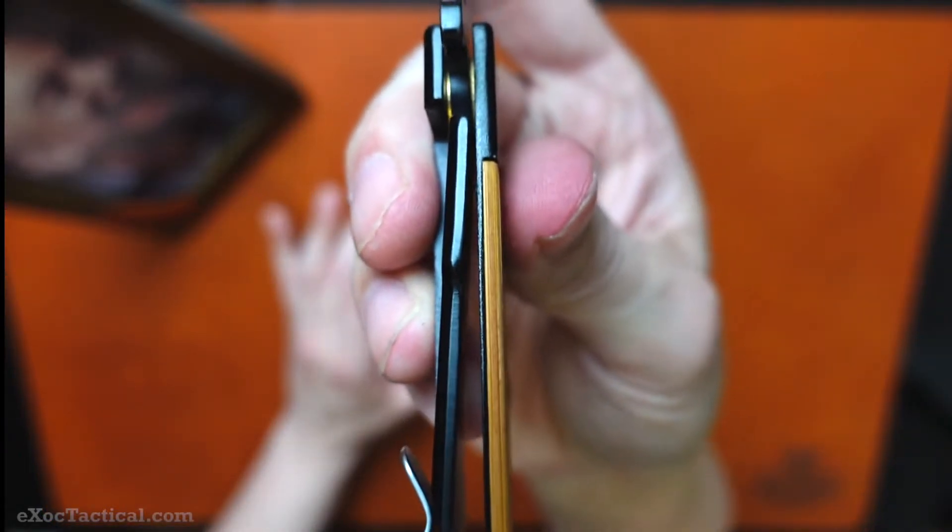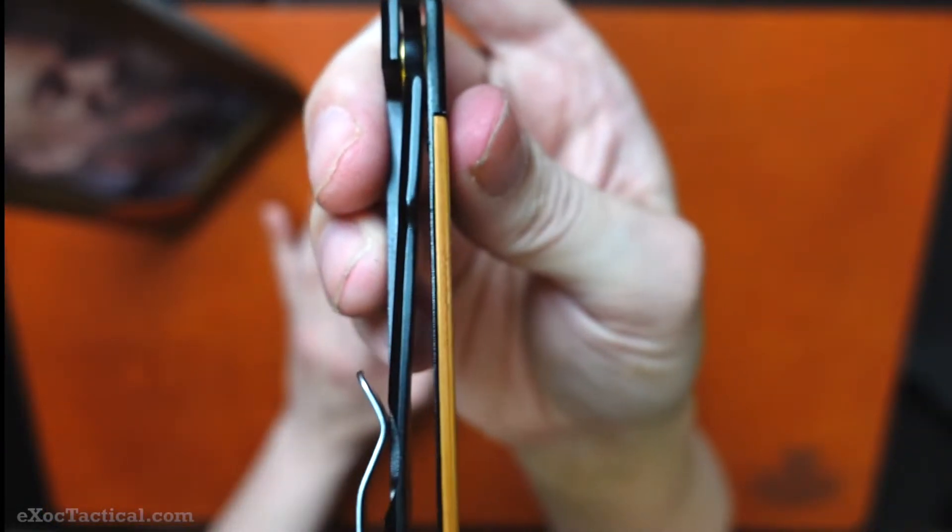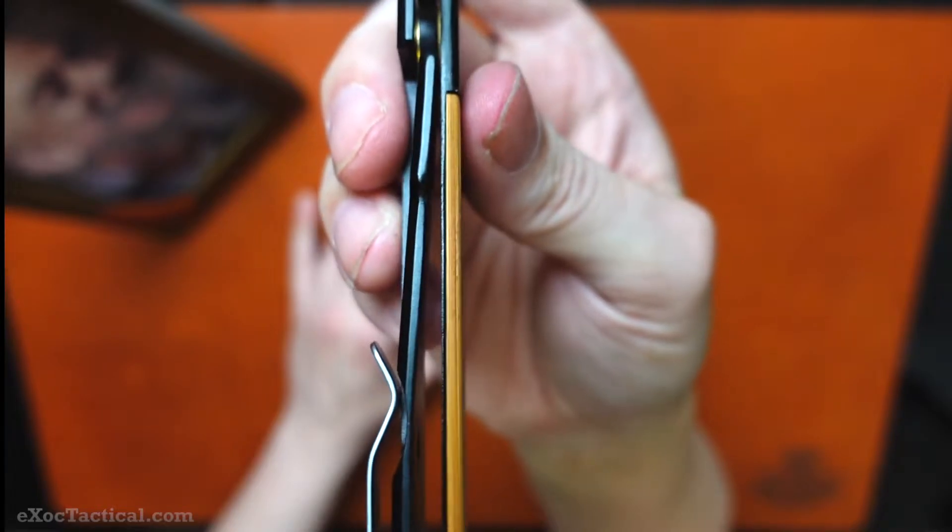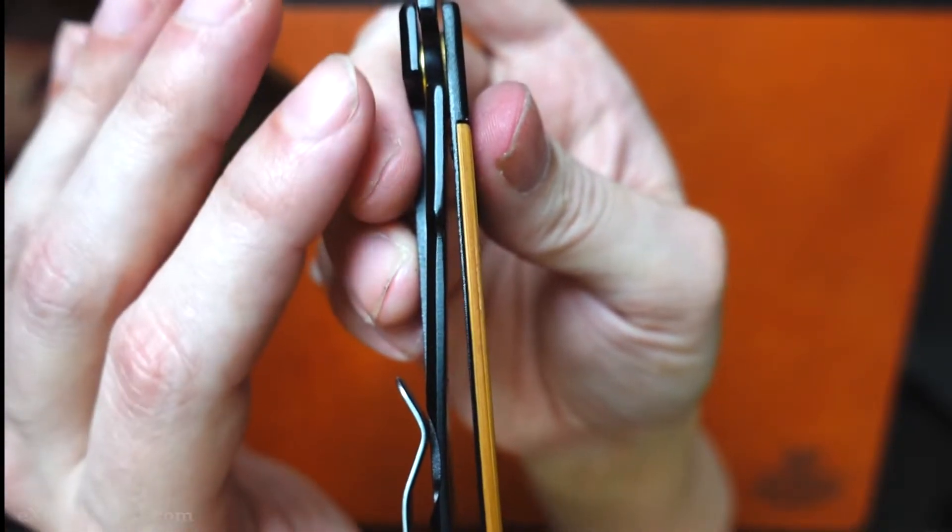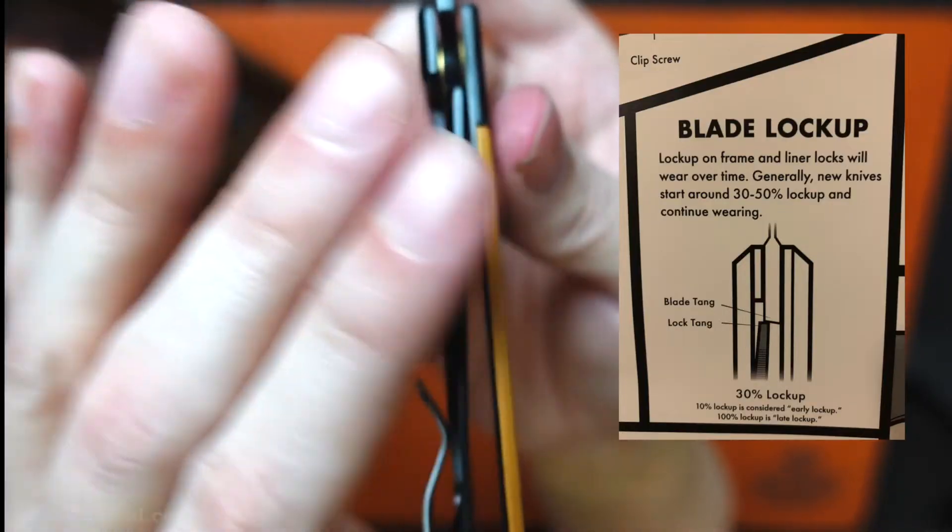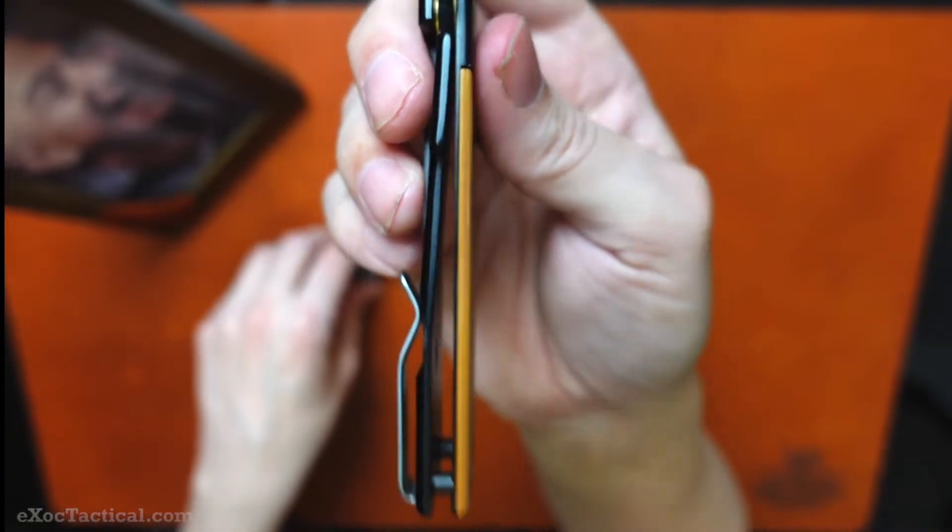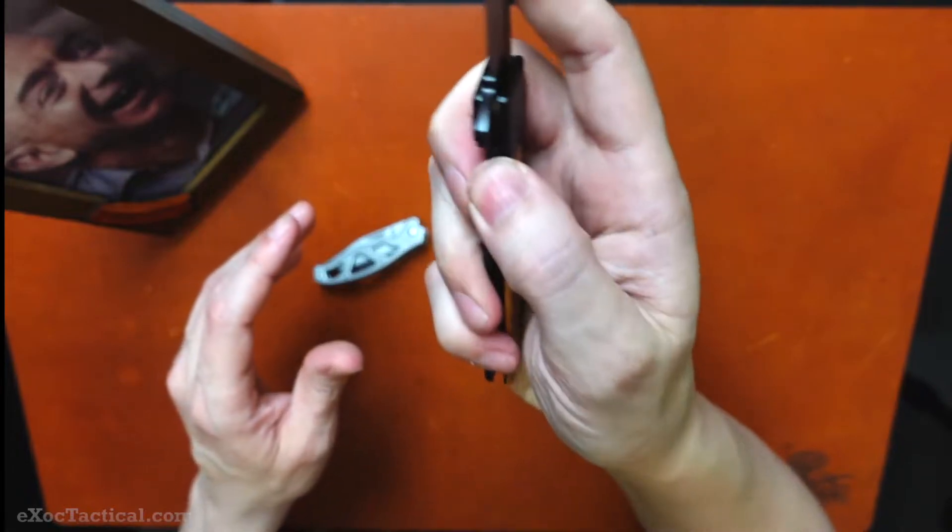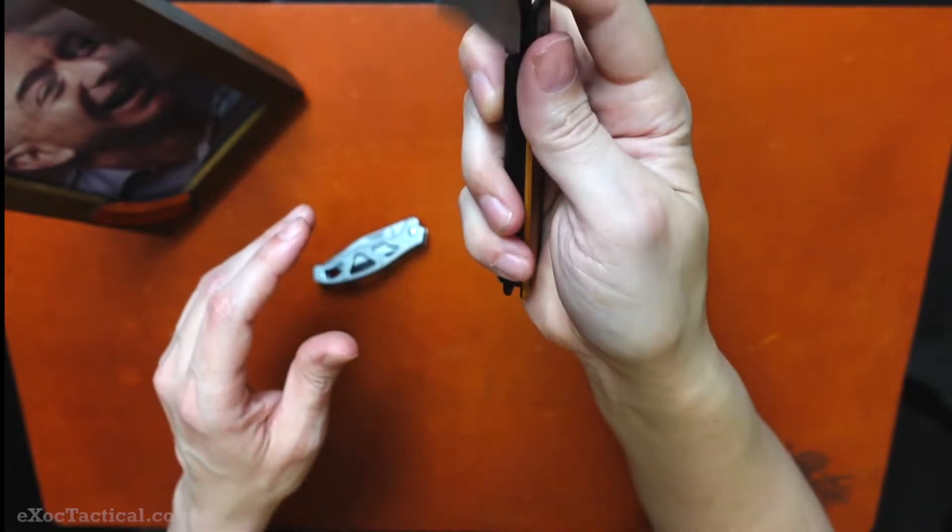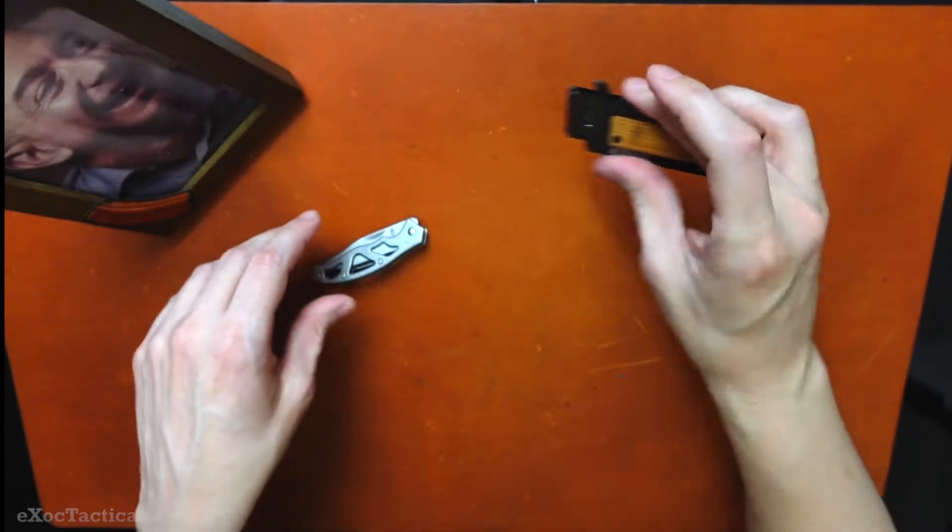Now, blade lockup is, I'd say, 100%. So it's like a good old worn knife. Blade lockup should be over here around 30 to 50%, not over there. This is already like a very well used knife. And what happens now is it's binding and it's hard to release. So that's the Quadrant.